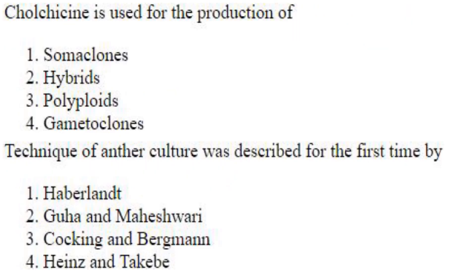Colchicine is used for the production of polyploids — answer is option 3. Gametoclones are plants regenerated from gametic cells, that is pollen and egg cells, through tissue culture. The technique of anther culture was first described by Guha and Maheshwari. This question was also asked in 2023.